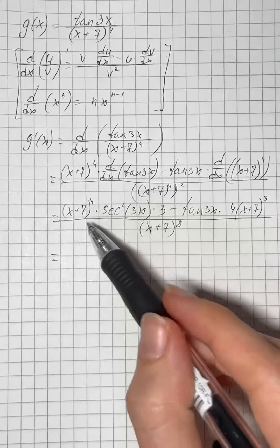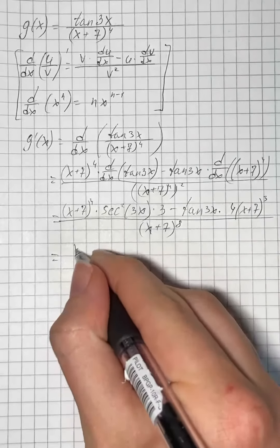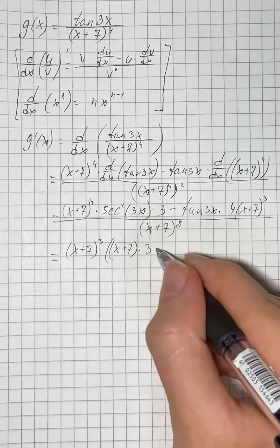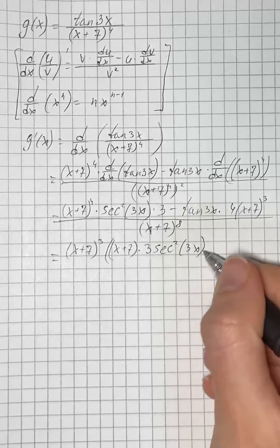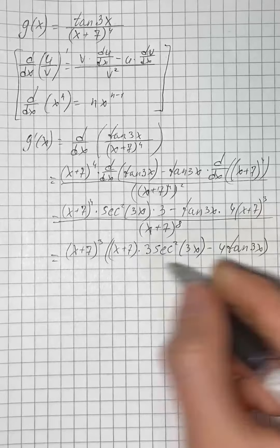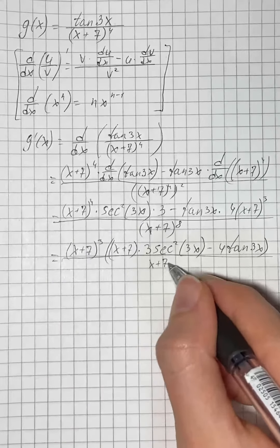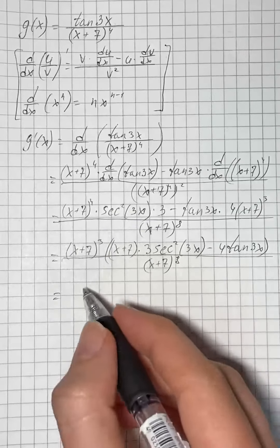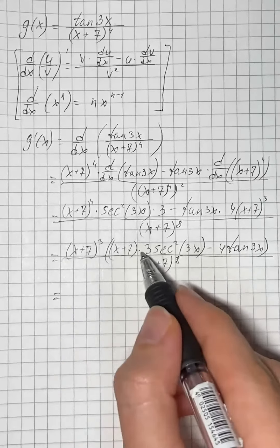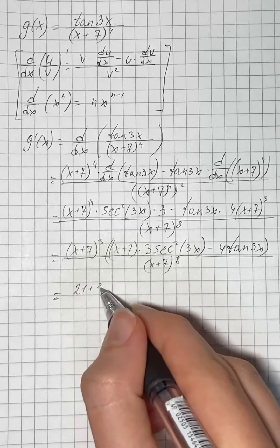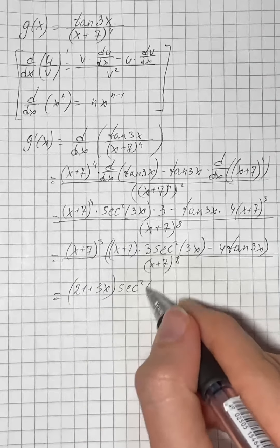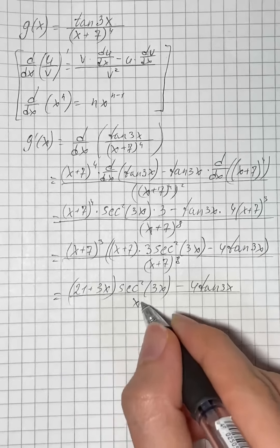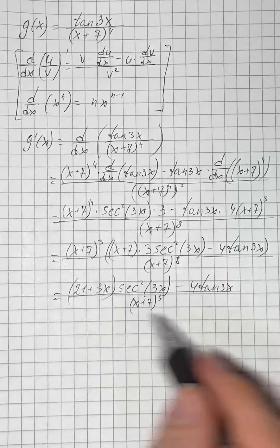Now we factor out x plus 7 cubed from the numerator. Inside the brackets we get x plus 7 times 3 secant squared of 3x, minus 4 tangent of 3x, all over x plus 7 to the eighth power. We cancel out x plus 7 cubed, then expand the brackets to get 21 plus 3x times secant squared of 3x, minus 4 tangent of 3x, over x plus 7 to the fifth power. That's our final answer.